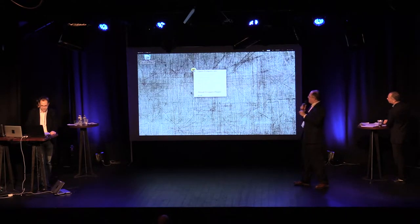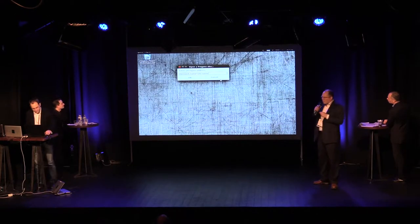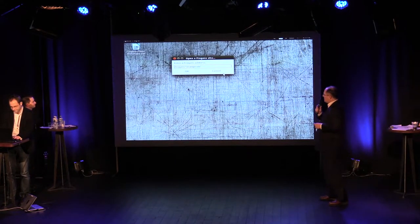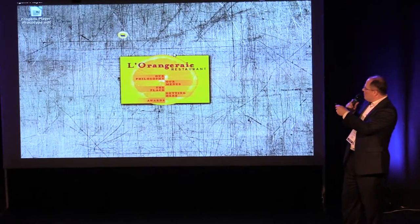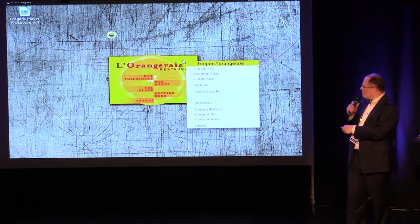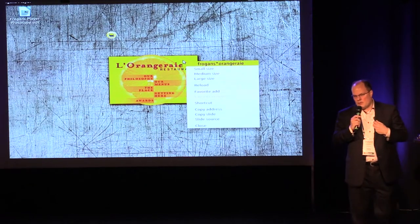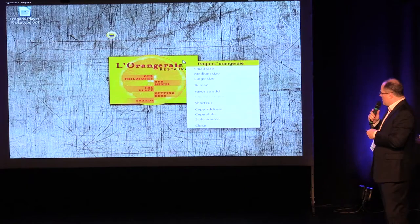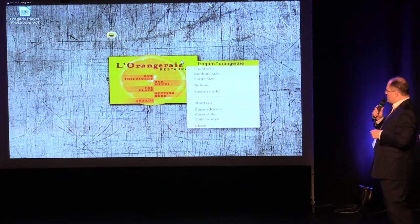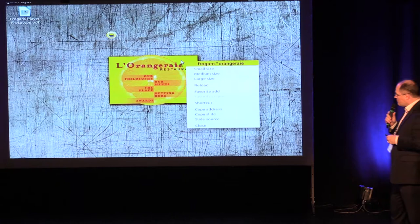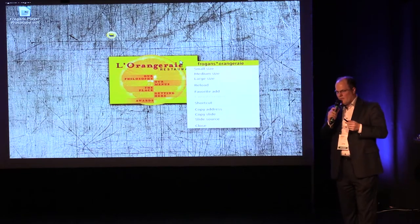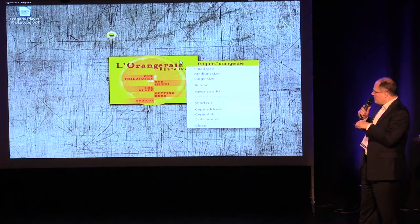For example, right-click, open Fragonz site, and I'm going to open that site I was talking about — this London-based restaurant called Orangeret. The address, as you saw — right-click on this other site — that's the address here: Fragonz asterisk Orangeret. As the owner of the restaurant, I reserved the site name 'Orangeret' on what we call the public Fragonz network, which is identified by 'Fragonz star.' Any person in the world who has a Fragonz player only types this address and comes up with this site.